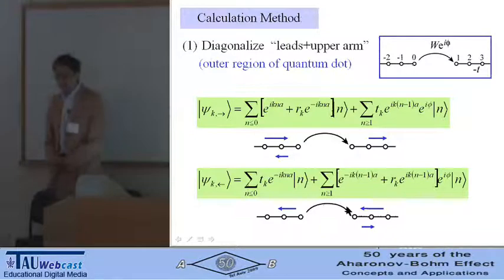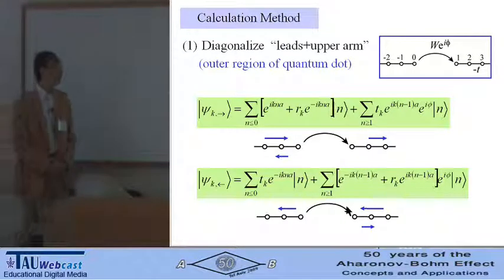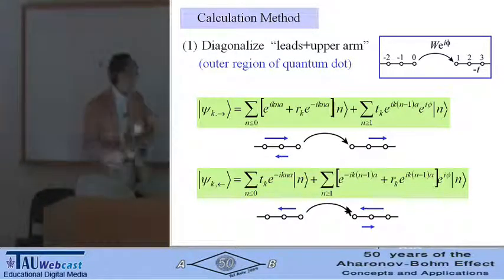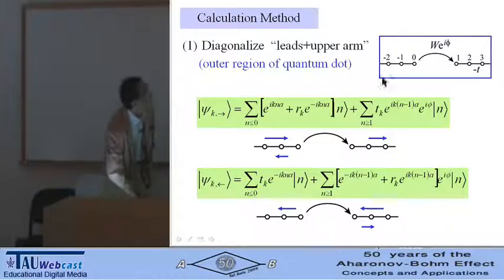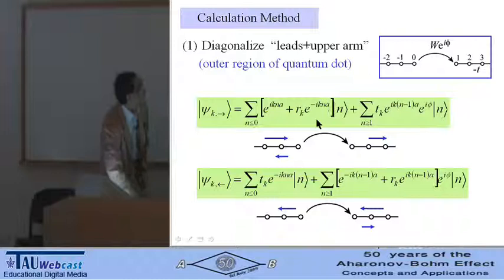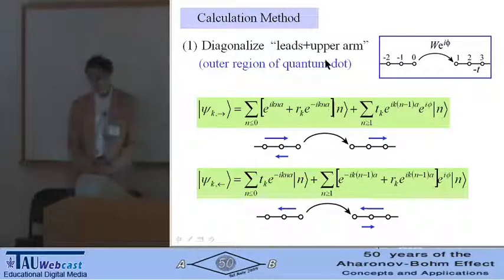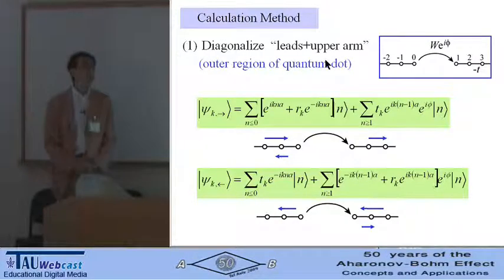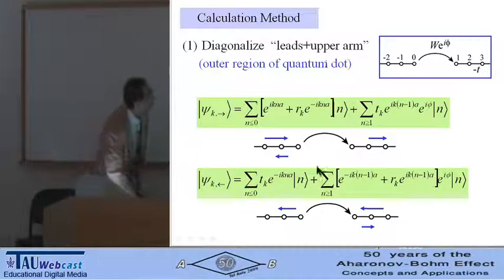The strategy of our calculation is as follows. First, we diagonalize the two leads and upper arm of the Aharonov-Bohm ring, or outer region of the quantum dot. There are two eigenmodes: one is incident from the left, partly transmitted and partly reflected; or incident from the right, partly transmitted and partly reflected.